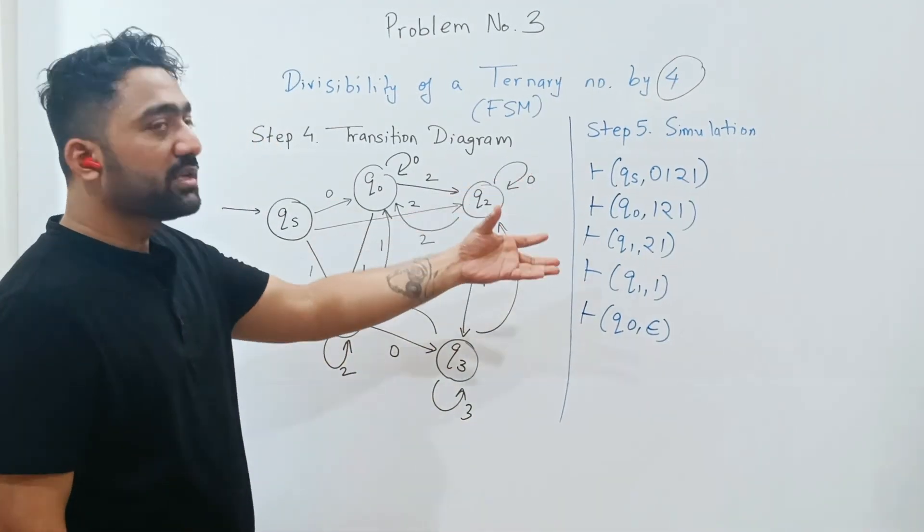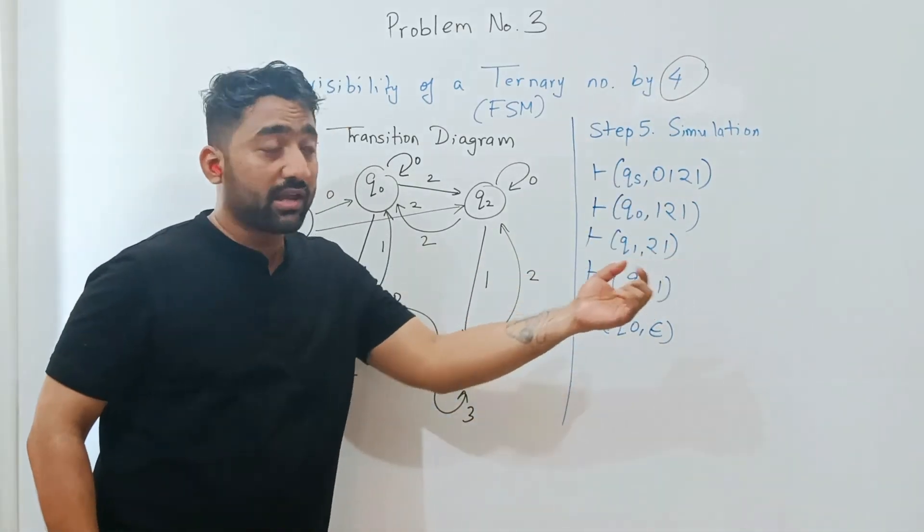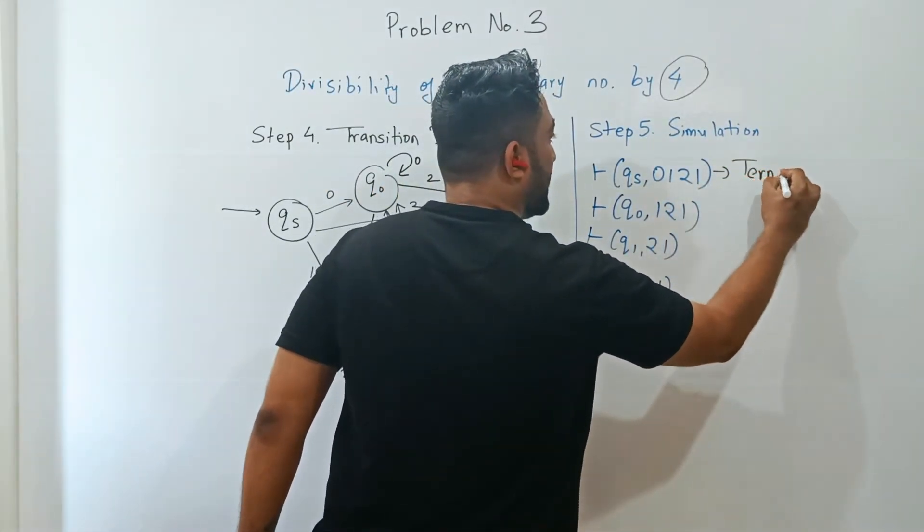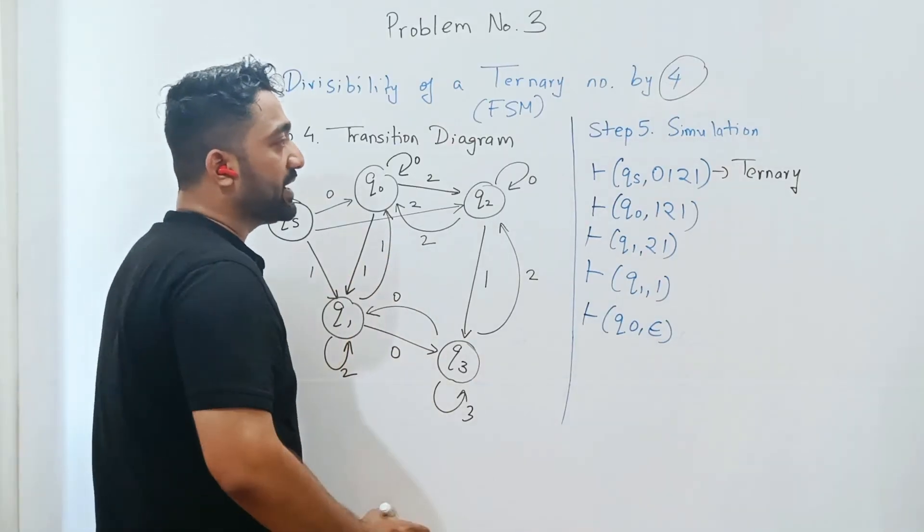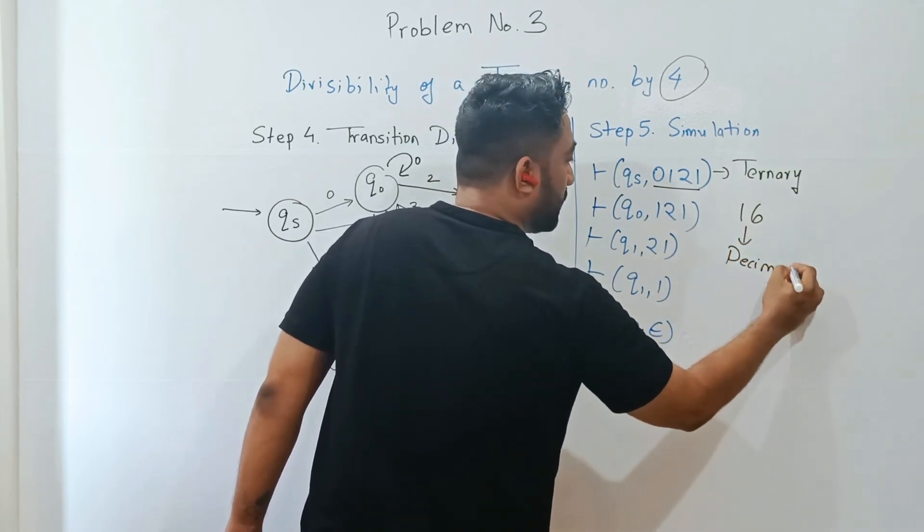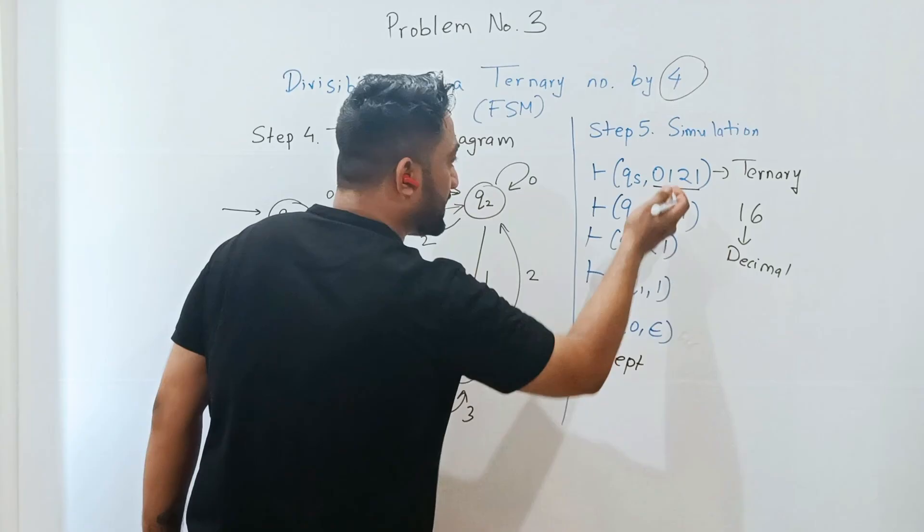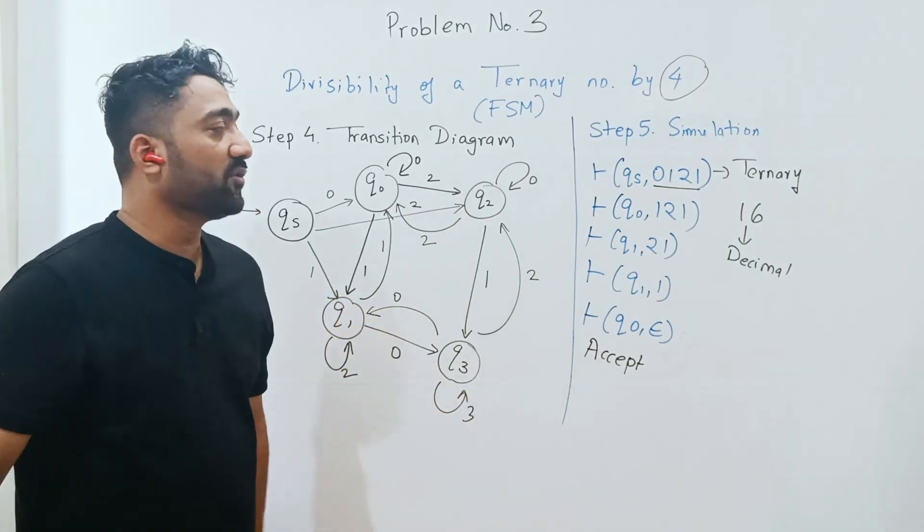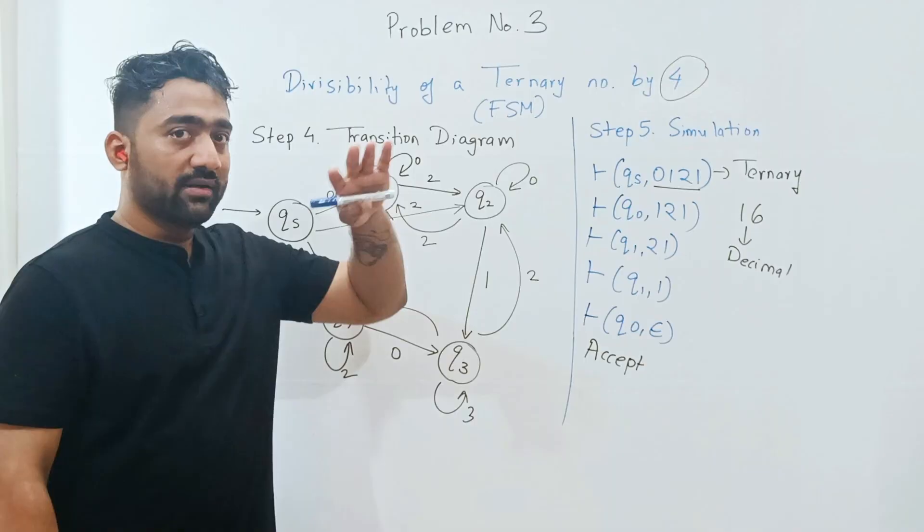Can you tell me how this number is divisible by 4? It doesn't seem like it will be divisible by 4, right? It has an odd number at the end. It's very simple - it's not decimal, it's a ternary number. Can you tell me what is the ternary equivalent? You can use online calculators or convert this base 3 into base 10, and you'll find that 0121 is nothing but 16 in decimal. Isn't 16 divisible by 4? Yes, it is divisible by 4, and that's why we got this answer as accept. Otherwise, if we take a decimal number, 0121 is not divisible by 4 and would never reach q0. But this is divisible by 4 because it's 16 in decimal format. I hope you got the understanding of how to create an FSM to check divisibility of a ternary number by 4.